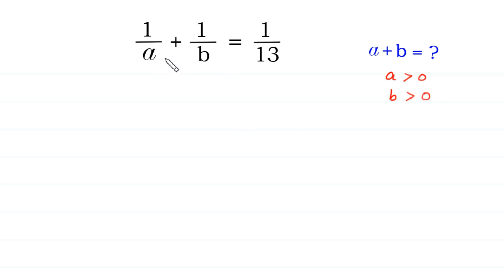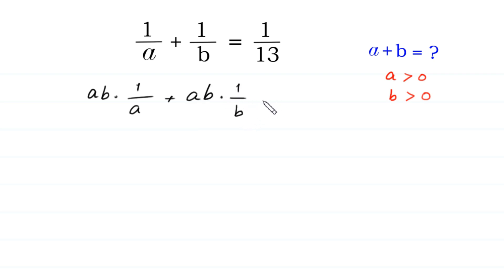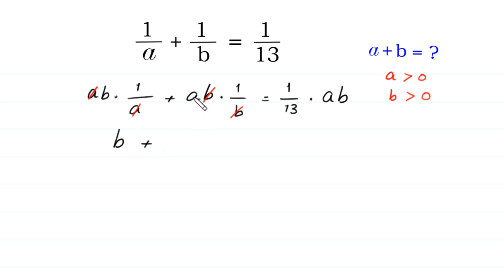First of all, we multiply both sides of this equation by AB. We multiply each term by AB: AB times 1 over A, plus AB times 1 over B, is equal to 1 over 13 times AB. Now, this A will cancel with this A, and this B will cancel with this B, leaving B plus A equal to AB over 13.